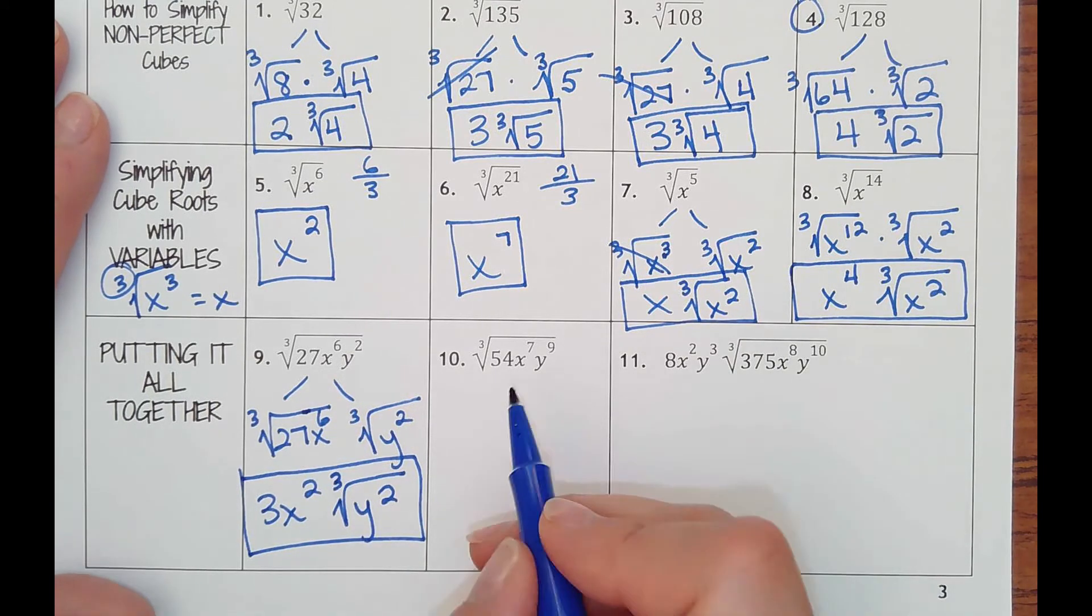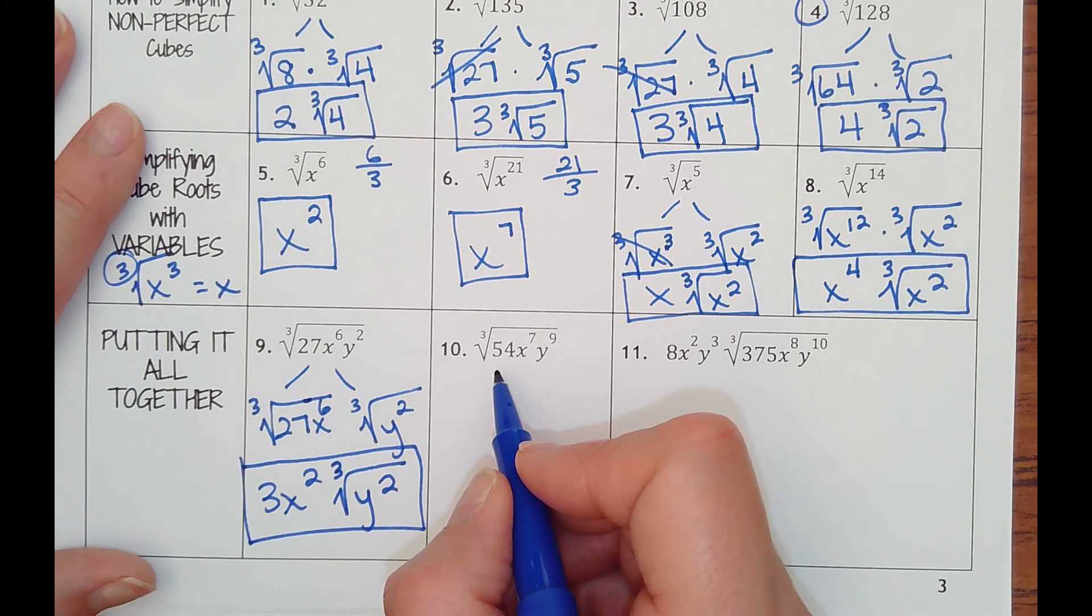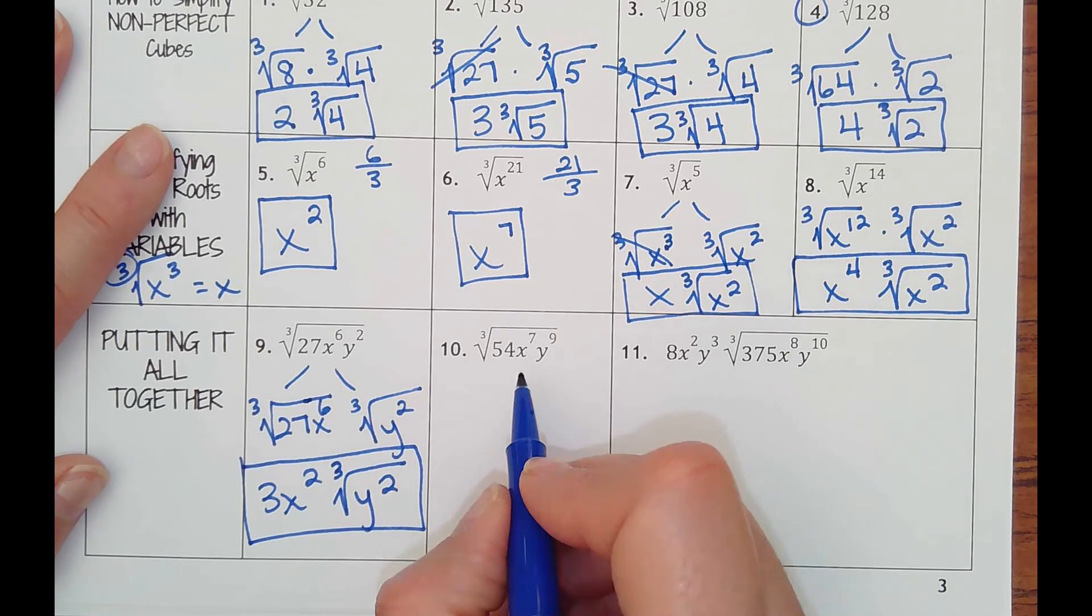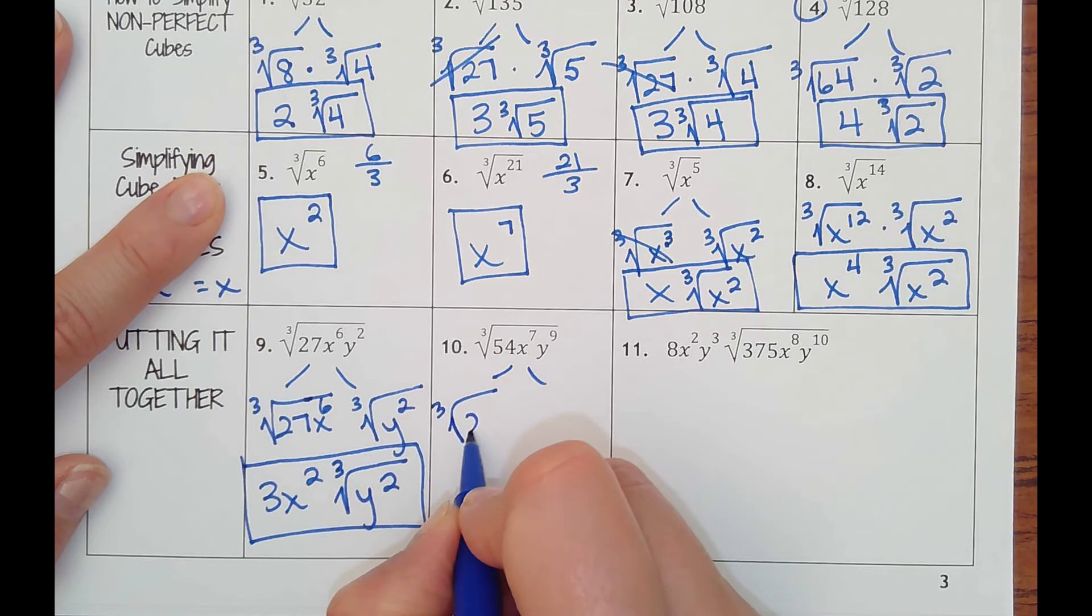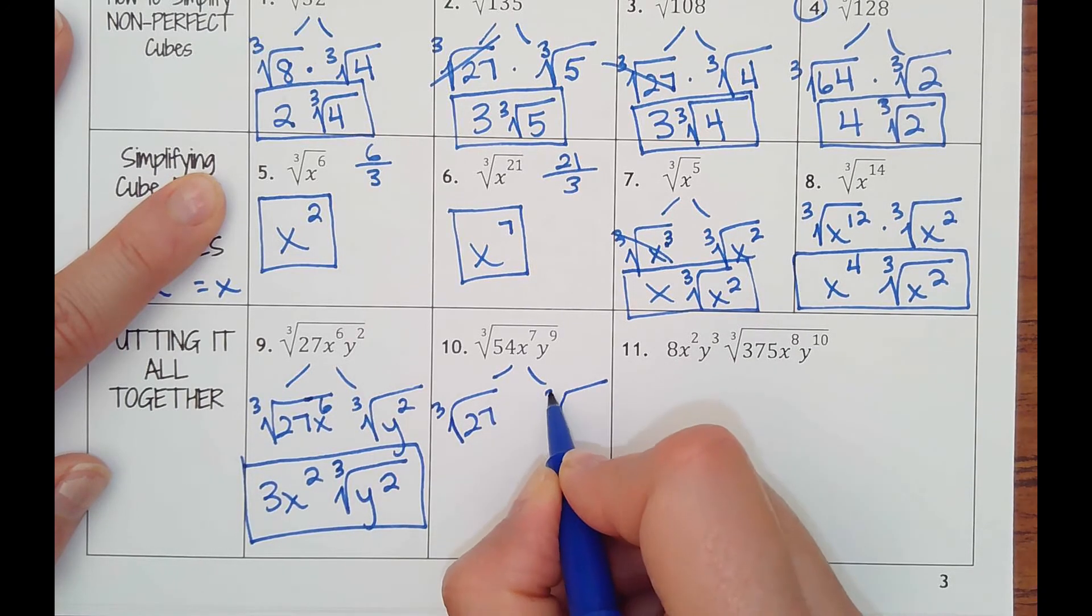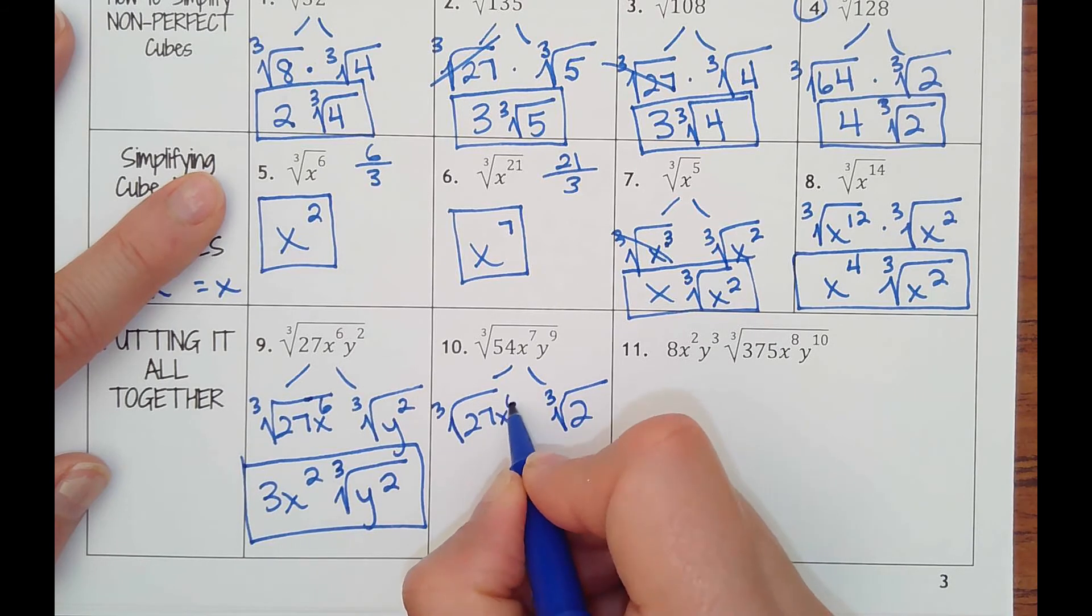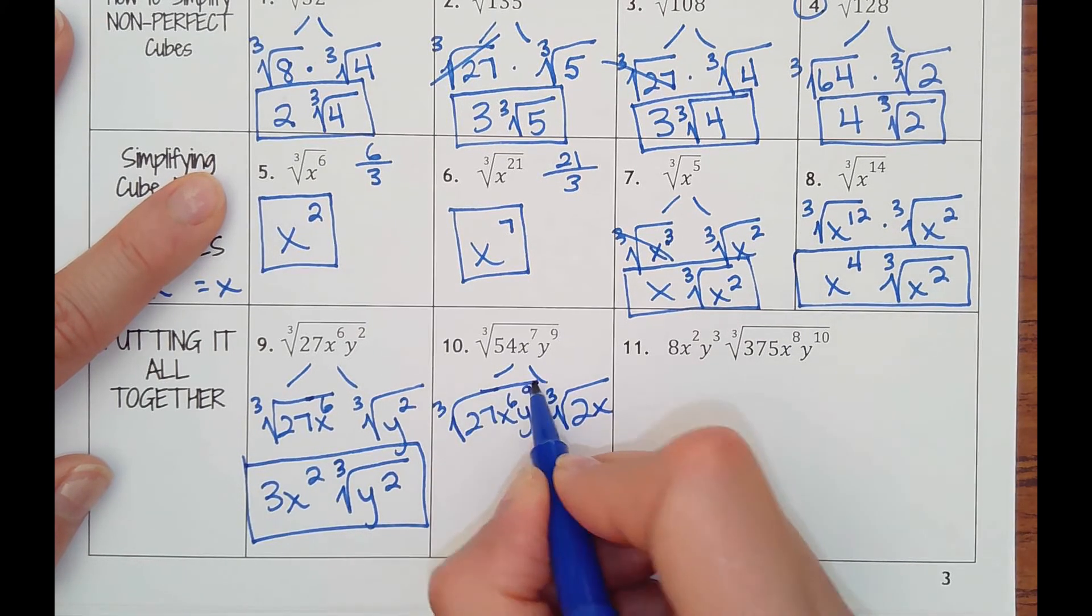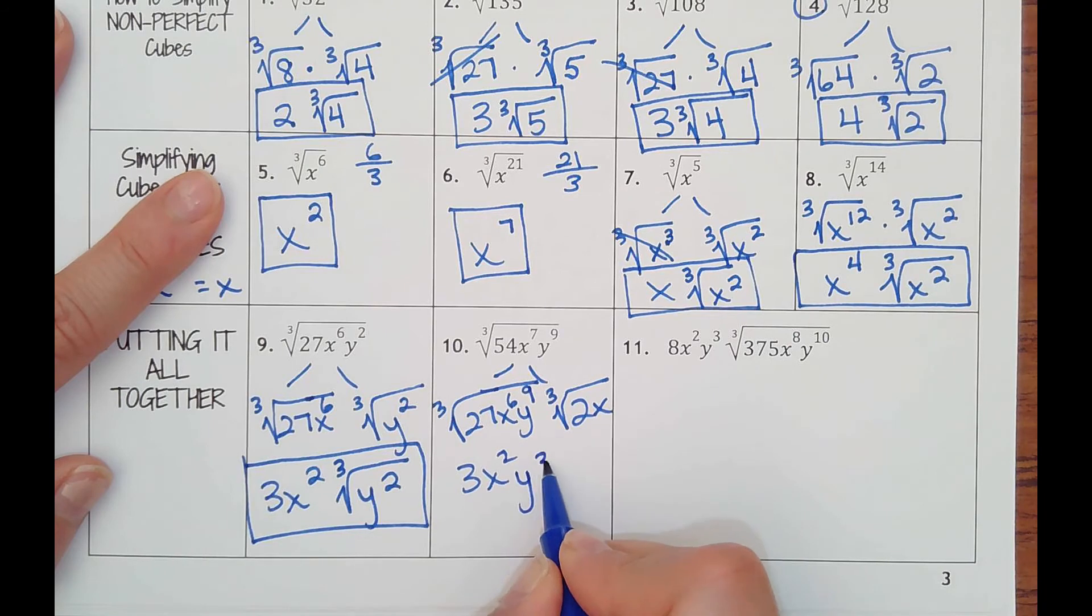Number 10, cube root of 54. 27 times 2, I believe, is 54. X to the seventh, let's round down to x to the sixth with a left over x. Y to the ninth is a multiple of three, so it'll stay. Cube root of 27 is 3. 6 divided by 3 is 2. 9 divided by 3 is 3. With the left over cube root of 2x.